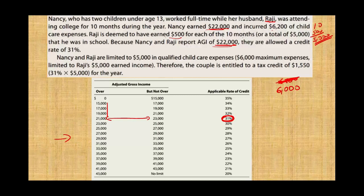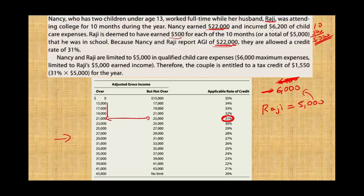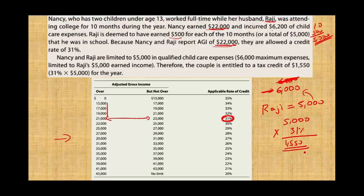Although they paid $6,200, the maximum eligible care cost is $6,000. However, Raji is only deemed to have earned $5,000, so you cannot use $6,000 — you must use the lower figure, which is Raji's $5,000 earned income. Multiplying $5,000 by 31% gives a dependent care credit of $1,550.